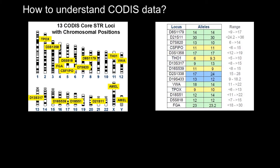CODIS stands for the Combined DNA Index System, which was invented by the FBI in order to collect genetic profiles of suspects, victims, and persons who break the law, keeping all this data in a database. Later, whenever any new biological evidence is collected at a crime scene, that genetic profile can be compared with data in this computer database. I've already made many videos explaining how the CODIS system works.